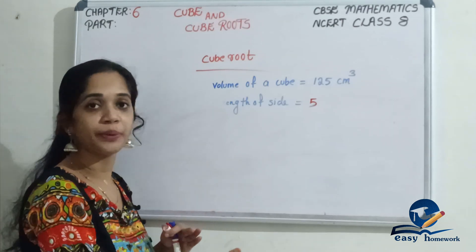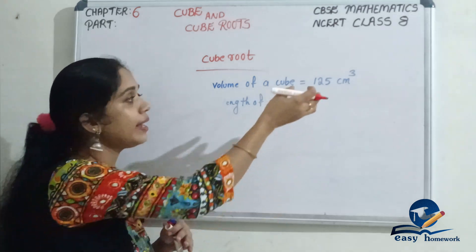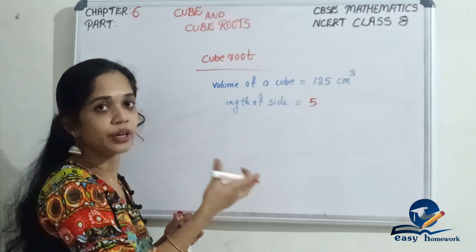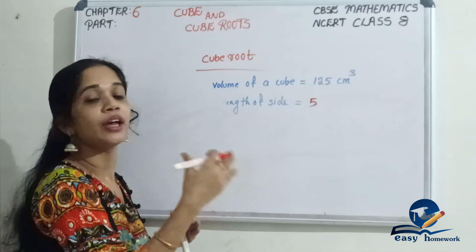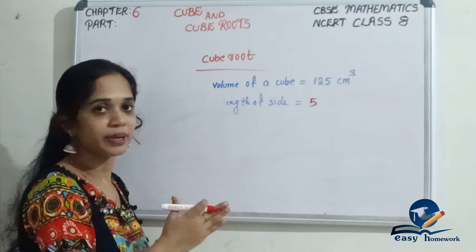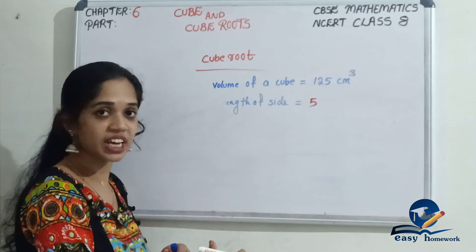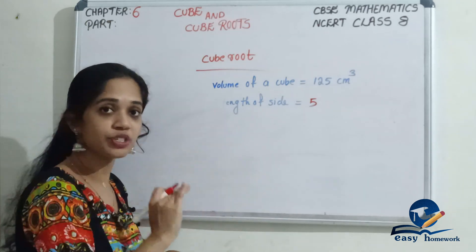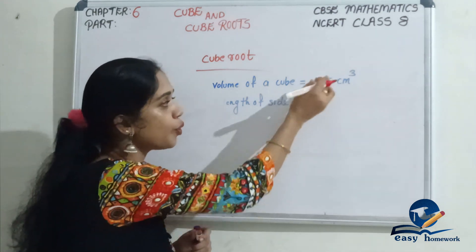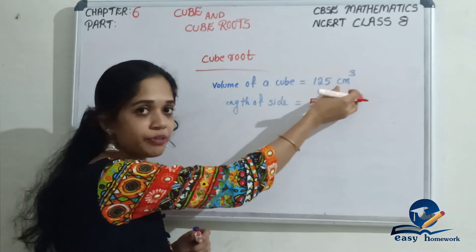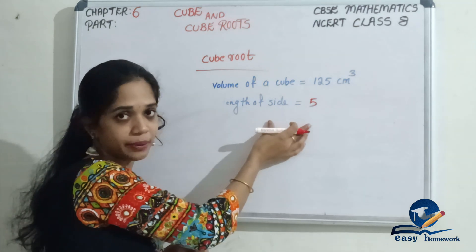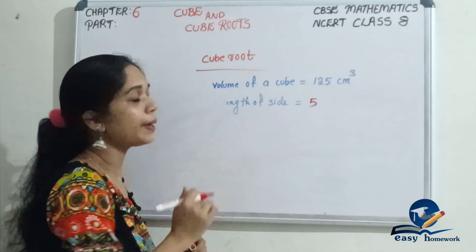We don't know the length. So let's say 125 is a cube — we will do the inverse operation. Which number cubed equals 125? That number is the length of the side. Okay?